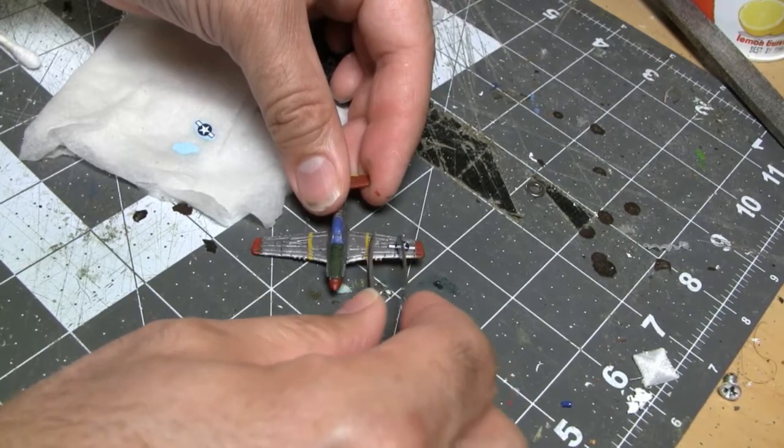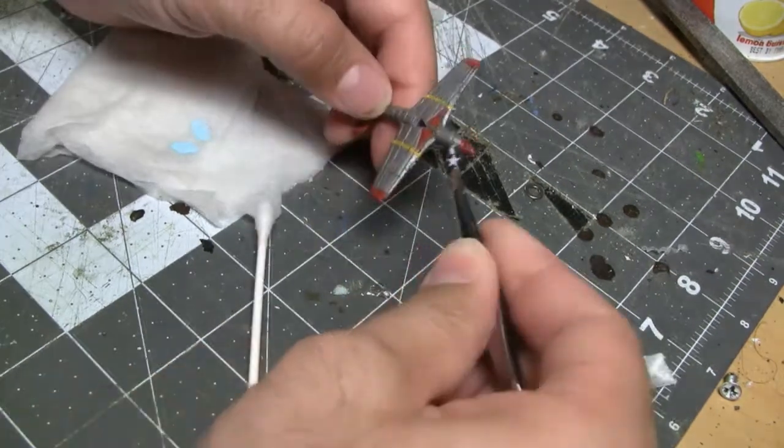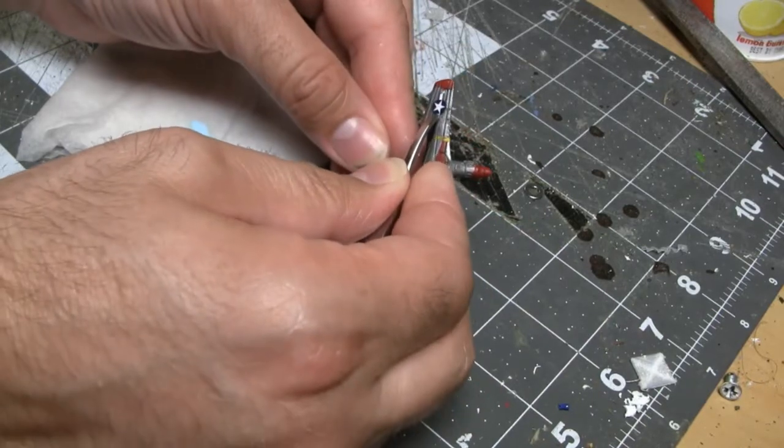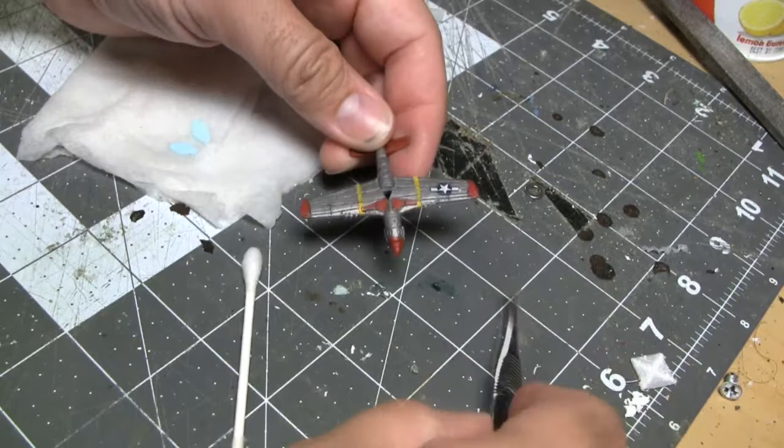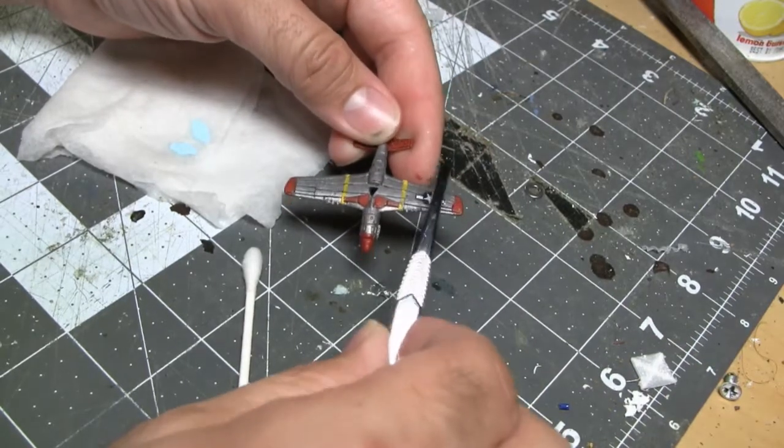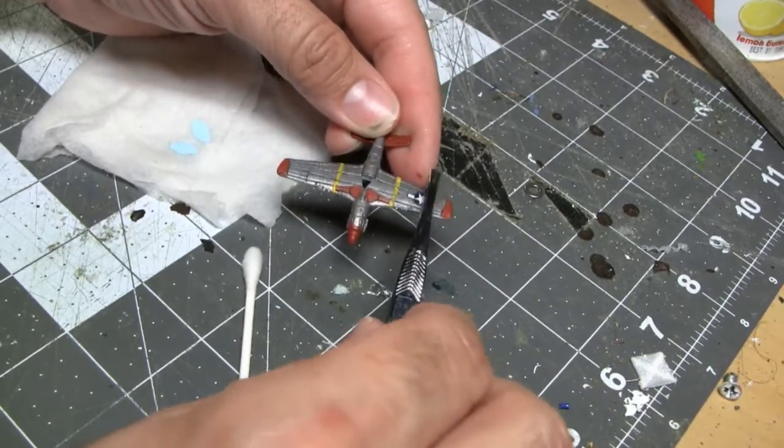This is where things can get a bit tricky. You're going to want to use either a Q-tip or tweezers, depending on what kind of works for you for this case. And you want to very carefully remove the water transfer decal from the backing paper and put it on the miniature.